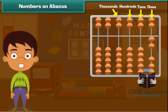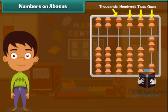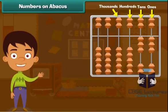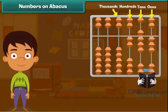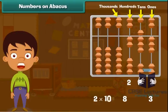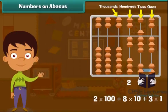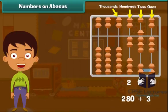Let us move three beads on the lower deck of the ones rod towards the beam to represent the number three. Now let us move three beads on the lower deck and one bead on the upper deck of the tens rod, representing thirty plus fifty which is eighty. Now we move two beads in the lower deck of the hundreds rod to represent two hundred. So the beads positioned in the abacus represent the number two hundred plus eighty plus three equals two hundred eighty-three.